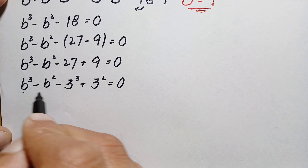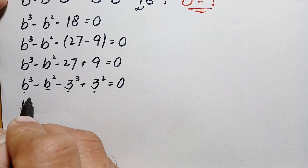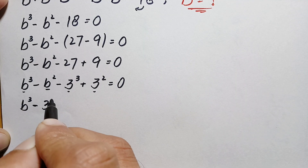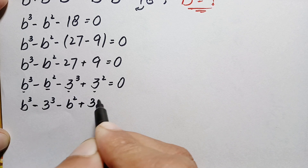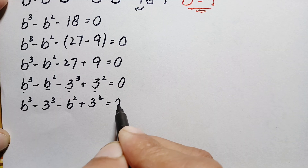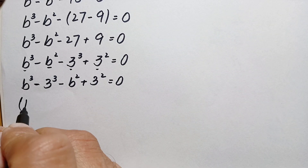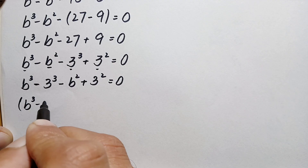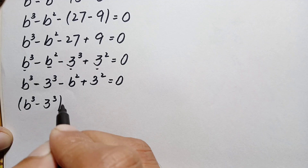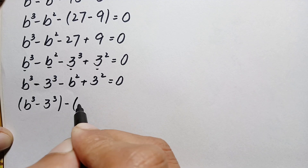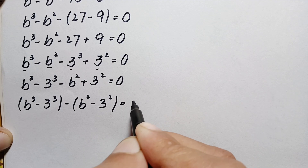Now we combine the cubic terms and the squared terms. The left-hand side becomes b cubed minus 3 cubed, minus b squared plus 3 squared equals 0. Taking out a negative sign common from the last two expressions, this becomes b cubed minus 3 cubed minus open bracket b squared minus 3 squared close bracket equals 0.